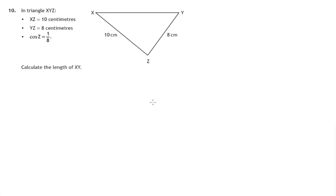So you should realise that if you are dealing with a non-right-angled triangle, then two rules you could use: the sine rule or the cosine rule. Now this is a paper with no calculator. It's unusual to have sine rule and cosine rule questions without a calculator. However, the clue here is that we're given that the cosine of Z is 1 eighth, so it would imply that the cosine rule is what is used.